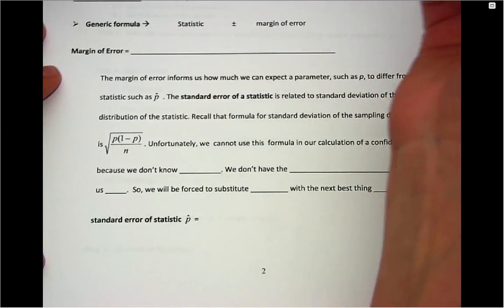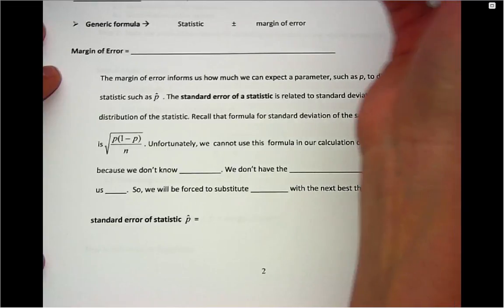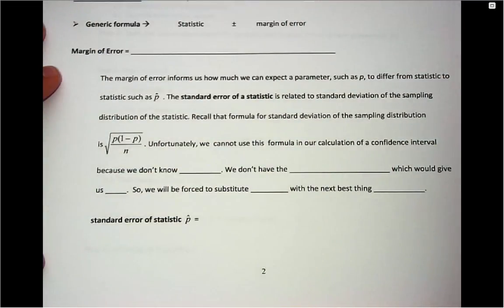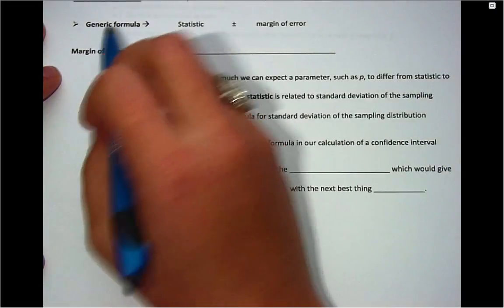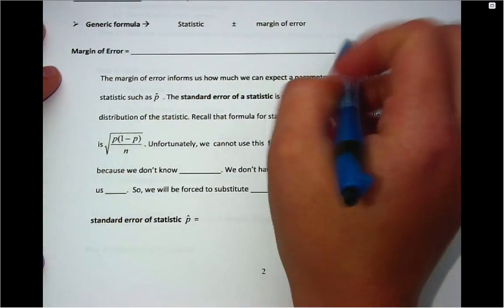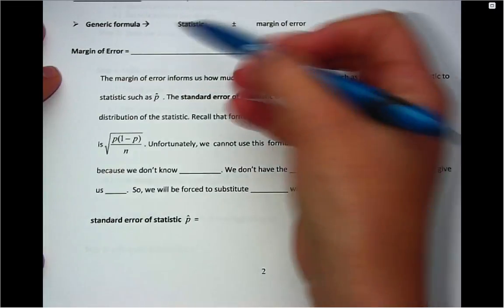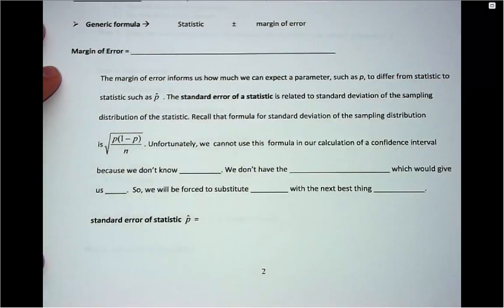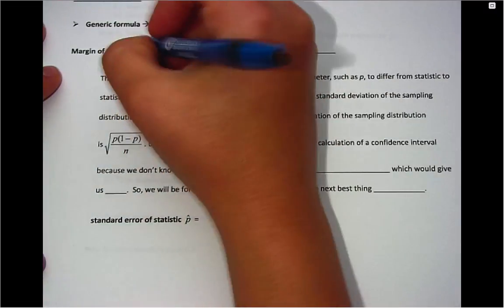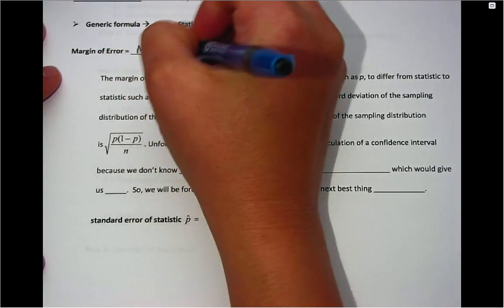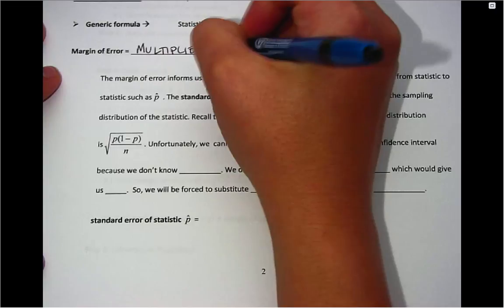We're still discussing the analysis of one categorical variable, and right now we're in a discussion of statistical inference. Last time we spoke about a formula for a confidence interval, which is one type of statistical inference. Generically, that formula uses a statistic plus or minus some margin of error, where margin of error uses a multiplier times a value called standard error.